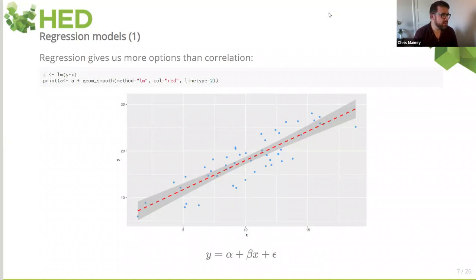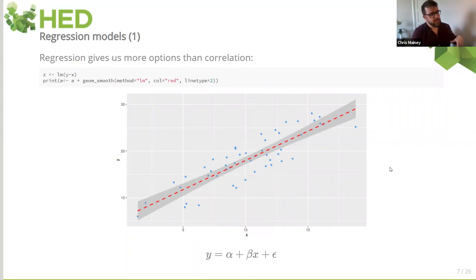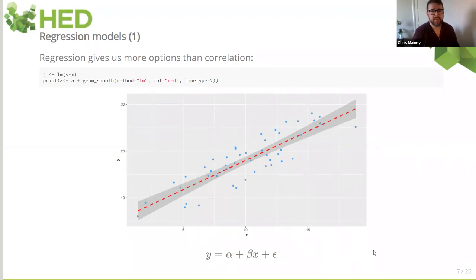I spotted something on the chat. You can interpret the correlation coefficient in the same way that you could interpret the R squared value, which is the proportion of the variation in y that is explained by x. So if we had a correlation coefficient of 0.8 and above, we're saying it explains over 80% of the variation. It's not quite a perfect analogy, but broadly that's how people use an R squared, and it applies across to your interpretation of the correlation coefficient as well.